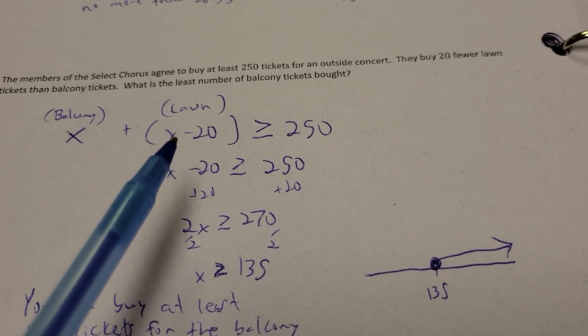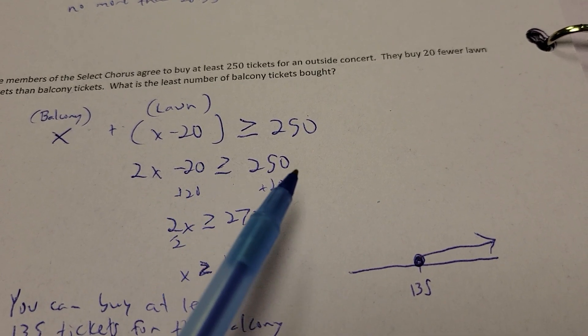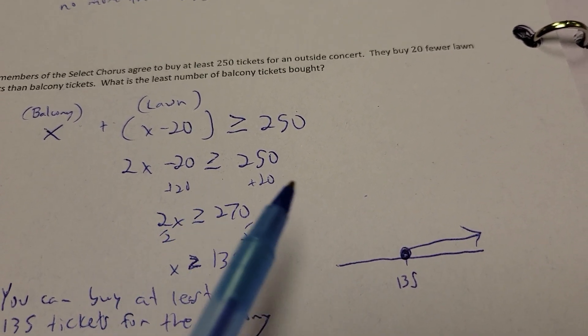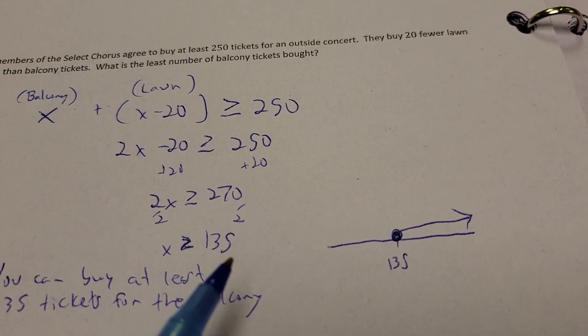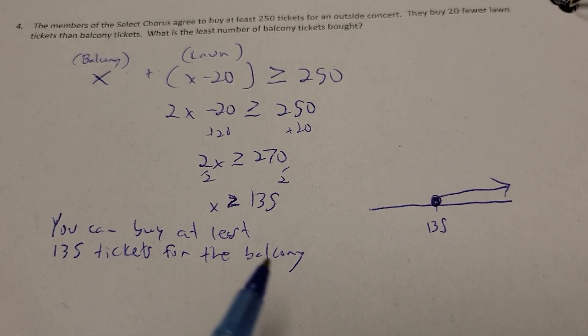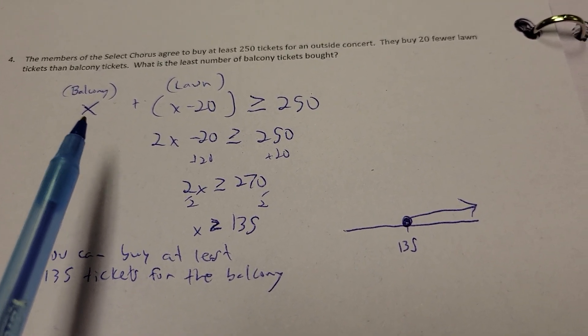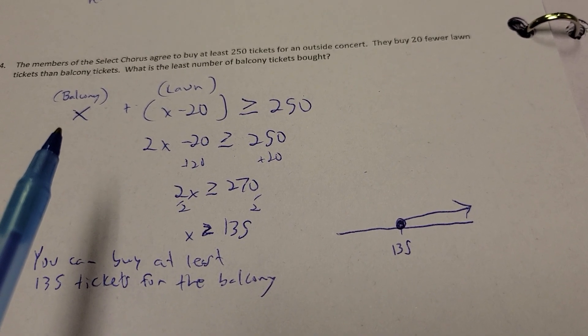So, on my X's, I get 2X, and the regular number is just a minus 20. So, 2X minus 20, greater than or equal to 250. Solve like a normal equation. We add 20 to each side, divide by 2. X has to be greater than or equal to 135. So, you can buy at least 135 tickets for the balcony. And balcony was my X, and that's what I'm looking for here, was the X. So, there we go.